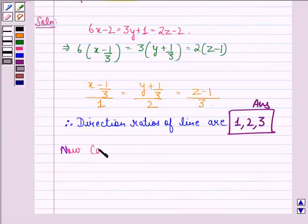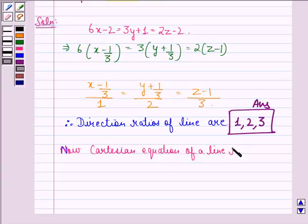Now, Cartesian equation of a line through the point A that is (2, -1, -1) and parallel to the given line is...